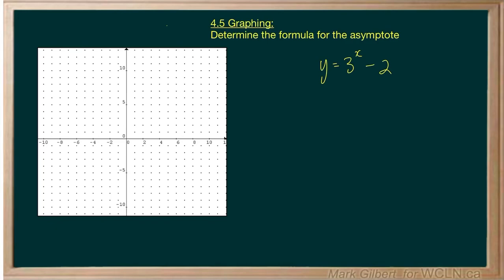In this example, we need to determine the equation or formula for the asymptote. The equation is y equals 3 to the power of x minus 2.